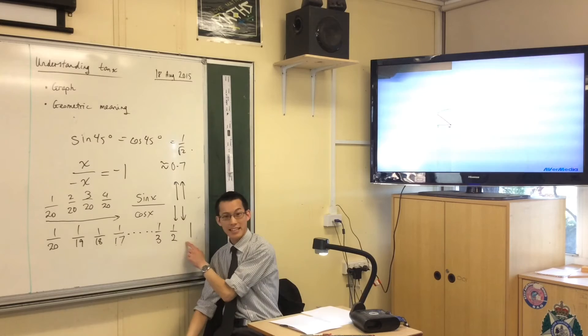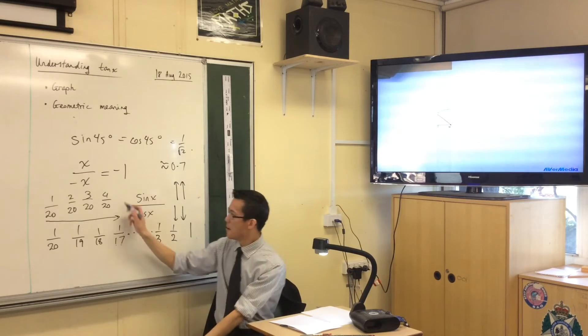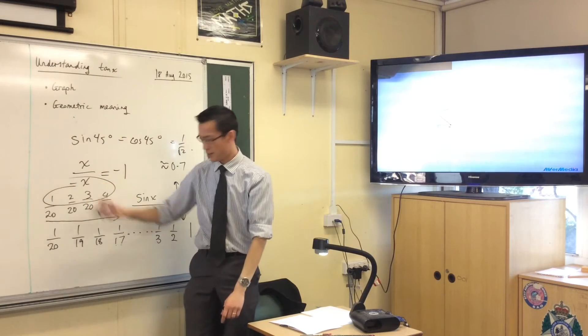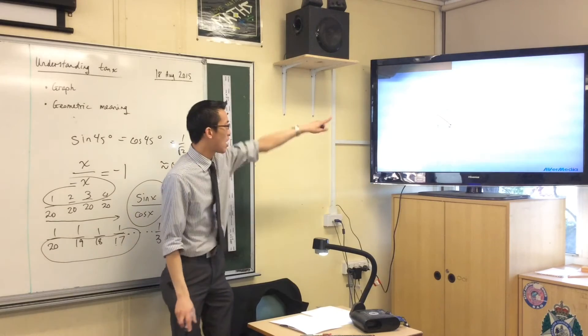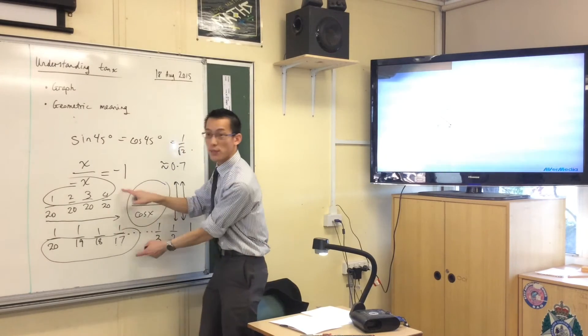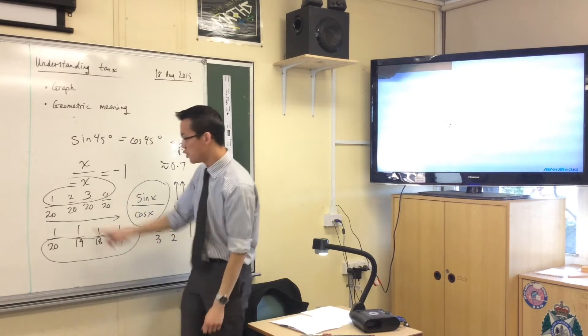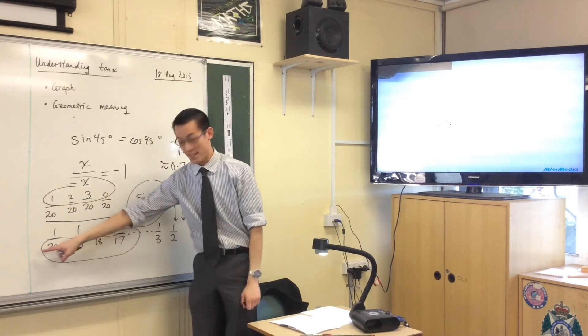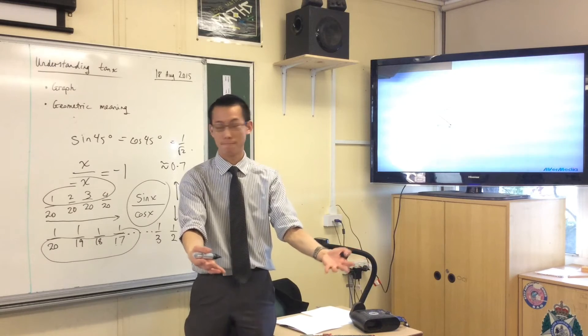Now watch: numerator is getting bigger, denominator is getting smaller. In the graph that we're looking at, for this tiny little section, both of these are happening at the same time. So you told me this makes it bigger and this makes it bigger. So if they're both happening, what do you expect?